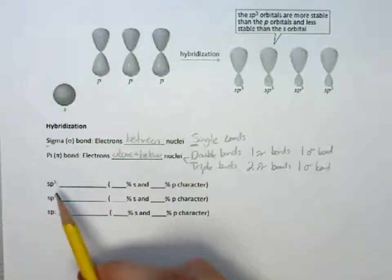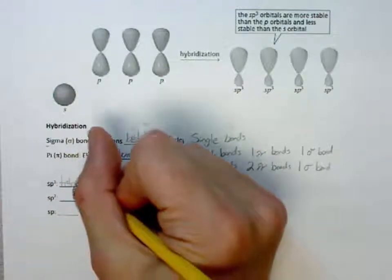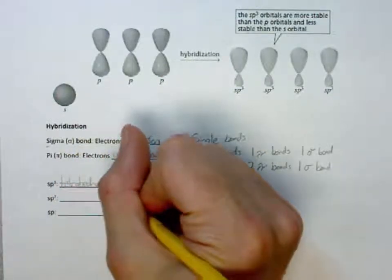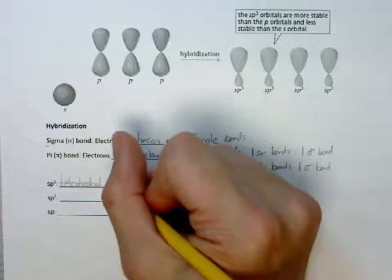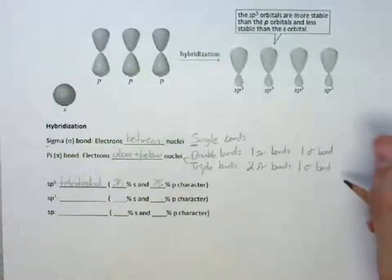For SP3, the shape is going to be tetrahedral, which is going to have 25% S character and 75% P character.